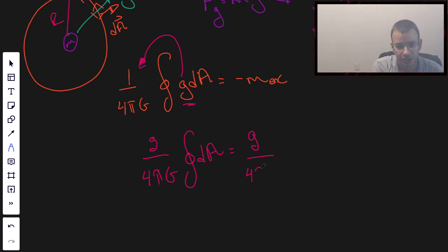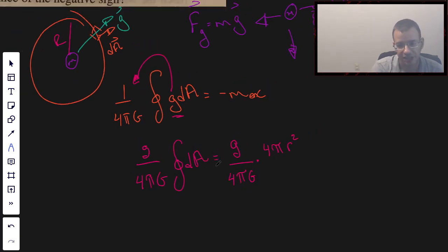Now this is going to be the surface area of our sphere. So this is going to be g, gravitational field, not to confuse with 9.8, though similar. 4πG times area of a sphere, 4πr squared, that's the surface area of a sphere, and that's going to equal mass enclosed.